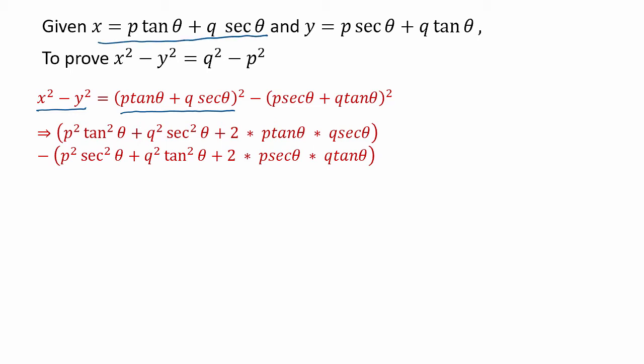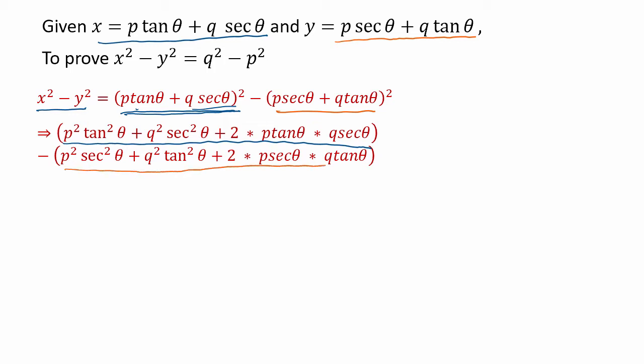X² is given by p·tanθ plus q·secθ, whole squared, which expands to p²·tan²θ plus 2p·tanθ·q·secθ plus q²·sec²θ. And when you expand y², you get p²·sec²θ plus 2p·secθ·q·tanθ plus q²·tan²θ.